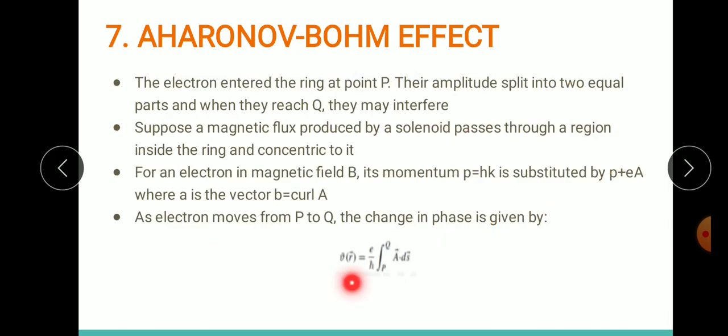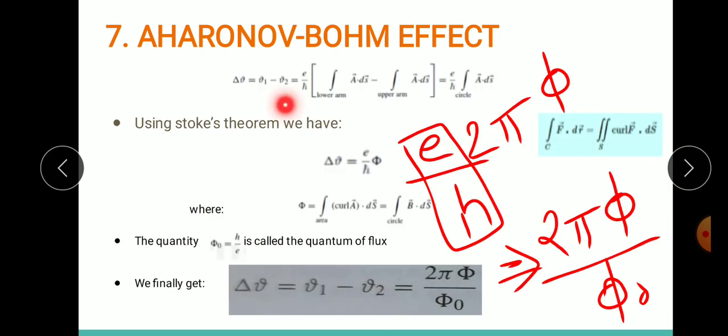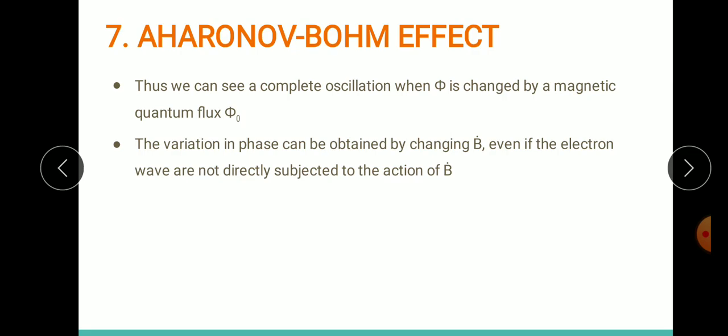To find the phase difference, we considered the path through the lower arm and upper arm forming a circle. Using Stokes theorem and simplification, we obtained this phase. We realized that due to this effect there was complete uniform oscillation, and the phase can be maintained for proper interference.